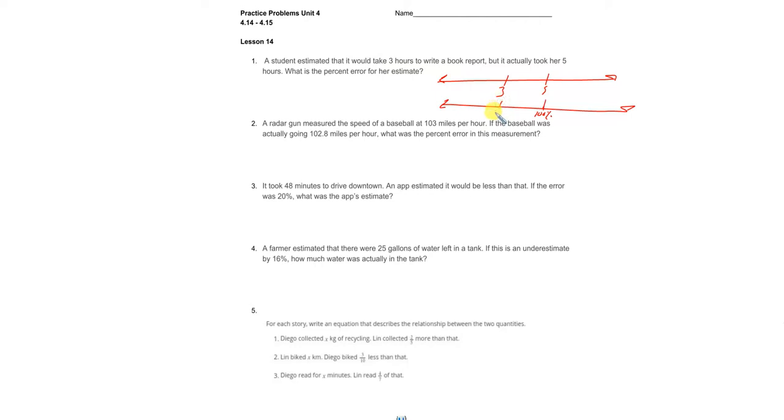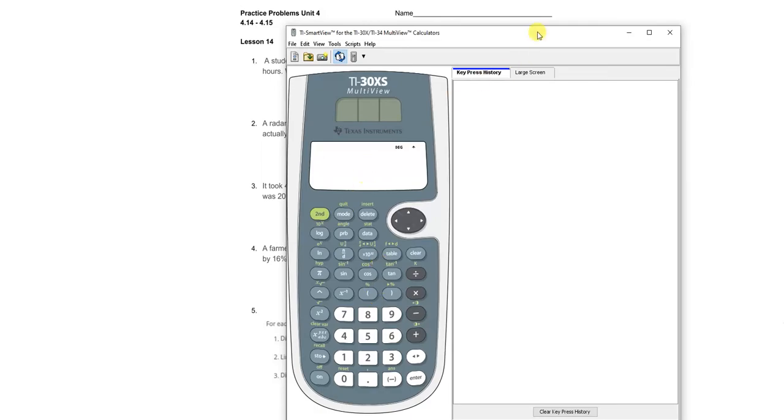Our job is to find this percentage and then see the error of her ways, how far off the whole that she was. So when you do that, you get 3 times 100.